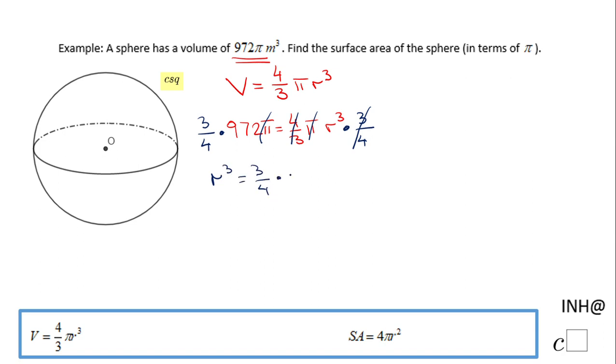Of course you can simplify here or you can multiply 972 times 3 and then divide by 4, and I end up with r cubed equal 729. How do I find r? Here I have two methods. You can use kind of a guess and check method...